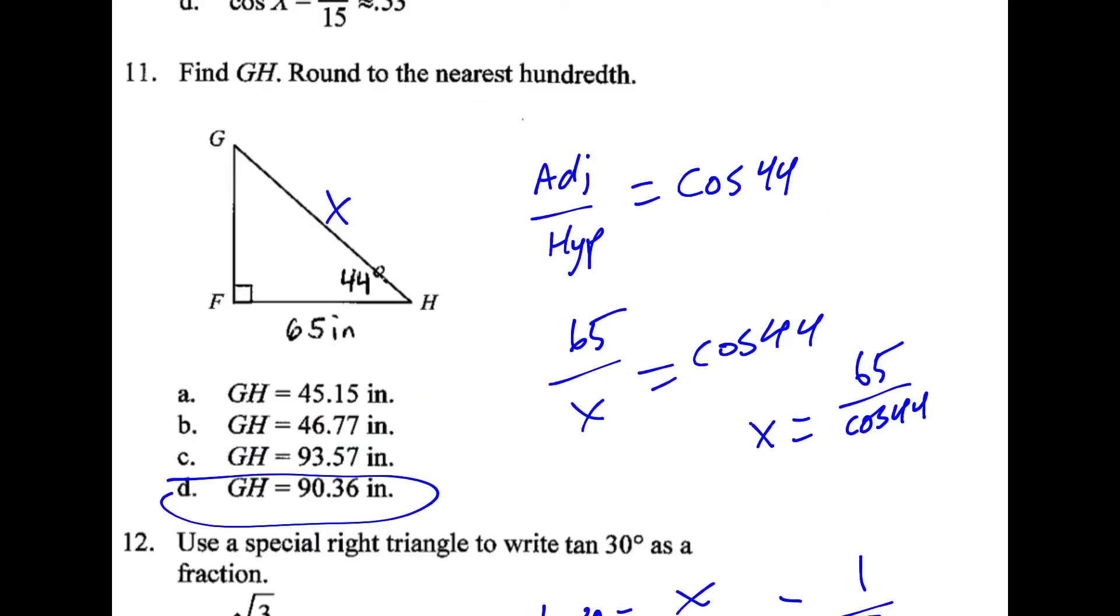For 11, cosine is again equal to adjacent over hypotenuse. So we plug it in. And to solve for x, we flip things around so it looks like this. And as long as we are in degree mode, we'll get the answer d.